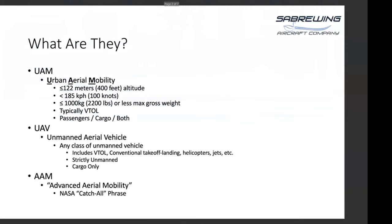So we'll start with UAM. It literally stands for Urban Aerial Mobility. It typically flies at an altitude of 122 meters or less, at up to 185 kilometers per hour, and they typically weigh less than about 1,000 kilograms. For the most part, they're VTOL. There are one or two that are very short takeoff and landing — some claim to take off with a full load in less than 10 meters. Some can carry passengers, some cargo, some both.